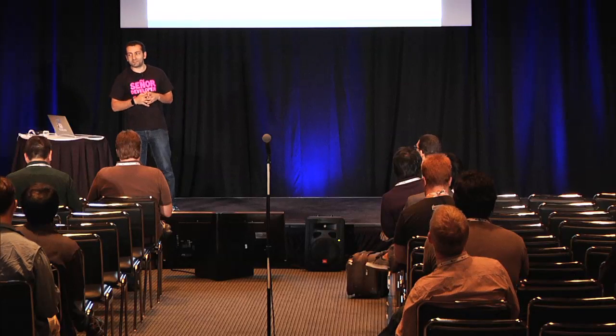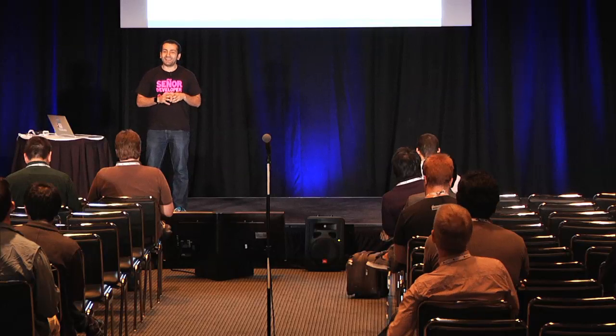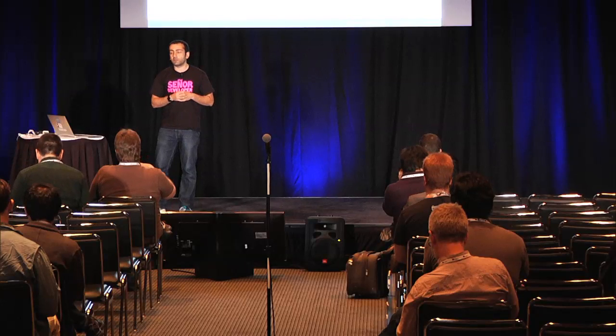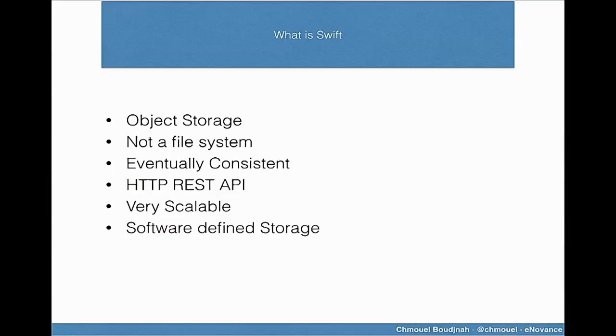The first question: what is Swift? I wasn't going to cover what Git is, because I'm assuming everybody knows Git — it's pretty popular. Is there anyone who doesn't know Swift in the room? Glad you came to an OpenStack meetup! So I'm just going to highlight a few things in case people on the internet don't know. It's an object storage — it's not a file system. It's based on eventual consistency. Everything is accessed via REST APIs. It's very scalable, designed to scale as much as you want. It's what people have coined 'software-defined storage' — the software manages your storage, not the hardware.